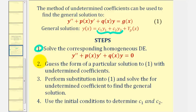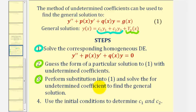Then we'll use steps two and three to determine big Y sub p, a particular solution. We start by guessing a form of a particular solution with undetermined coefficients based upon the form of g of x. Then by using our guess and its derivatives, we perform substitution into the differential equation and solve for the undetermined coefficients. Finally, we'll use initial conditions to find c sub one and c sub two. Let's take a look at our example.